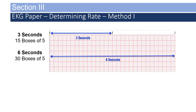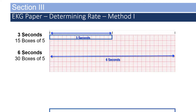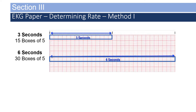This is a quick review, but a good foundation is absolutely necessary when interpreting 12-lead EKGs. Fifteen boxes of five small boxes is three seconds, delineated at the top of most EKG paper with dark hash marks. Thirty boxes, each containing five small boxes, is six seconds. It is important to understand where your six-second marks are on your strip, as that is one of the ways you'll determine the rate.